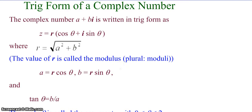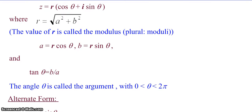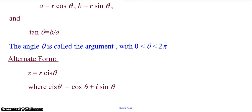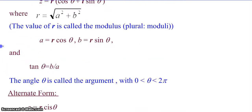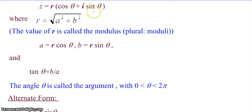The angle theta — where tangent of theta is b over a — is called the argument, where theta is between 0 and 2 pi. There's also a shorthand form where we can write z equals r cis of theta, where cis theta represents cosine theta plus i sine theta. So this is shorthand for the trig form r cosine theta plus i sine theta.